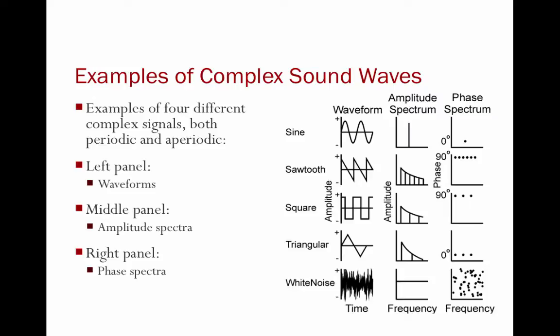This picture is important. Let's go through them one by one. At the top, we have sine waves, sawtooth, square, triangular waves, which we haven't spoken about yet but are pretty easy to understand, and then our aperiodic noise. Column one shows the waveform, column two shows the amplitude spectrum, and column three shows the phase spectrum.